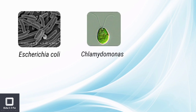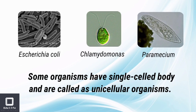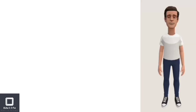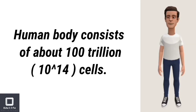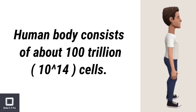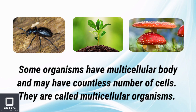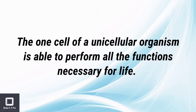Bacteria and Chlamydomonas are single-celled bodies — that is, unicellular organisms. The human body has 100 trillion, that is 10 raised to the power 14, cells — that is, a multicellular organism. In a unicellular organism, the entire function is carried out by a single cell.